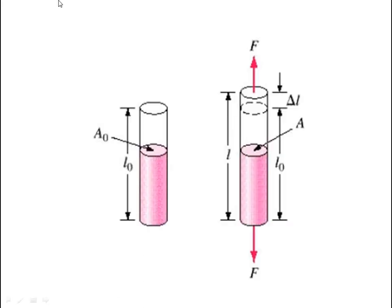For a sample with original length L0 and cross-sectional area A0, when a tensile force is applied, its length increases and the increment in length is delta-L.